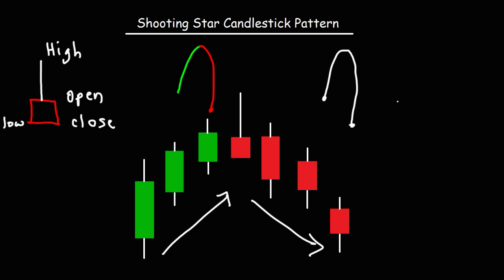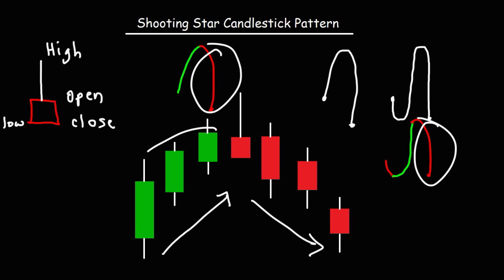Something else that could happen with this candlestick is that it can open here, go down to the low, then to the high, and then back to the low, closing the stock for the day. In this case, the sellers took control at the beginning, buyers came back in and drove the price from the low to the high, and then the sellers came back and brought it back down to the low. In either case, the sellers took control at the end of the day, indicating a reversal from an uptrend to a downtrend. That's basically it for this video — hopefully this gave you a good introduction to candlesticks and how to use candlestick patterns to identify a potential trend reversal.